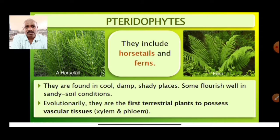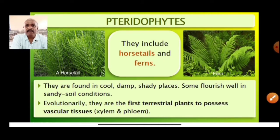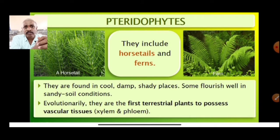The interesting thing is that bryophytes are called amphibians — to complete their life cycle and for reproduction they require water. But here, pteridophytes are considered the first ever terrestrial plants. Most importantly, there is a presence of vascular tissues. The vascular tissues are two: xylem, for conduction of water, and phloem, for conduction of food.